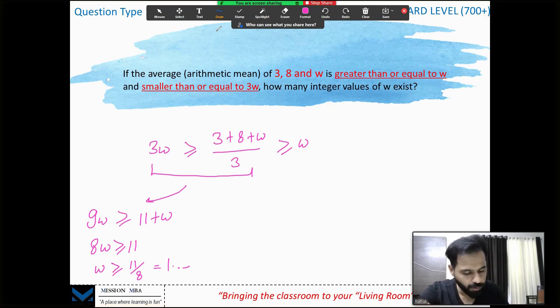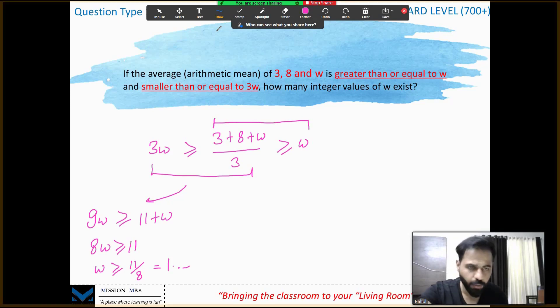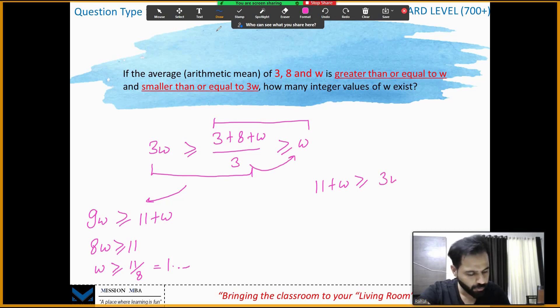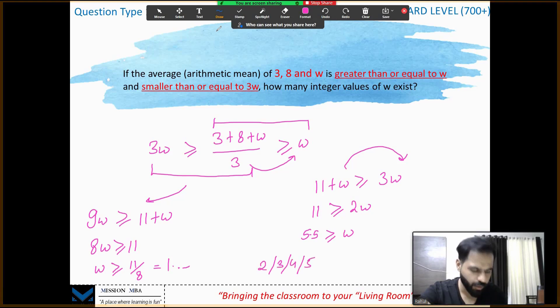Let's try to solve this side of the inequality as well. 11 plus w is greater than or equal to, now this goes over here, 3w. Better to keep the w's or the variables positive, so I'm taking this w over here. 11 greater than or equal to 2w, w less than 5.5.